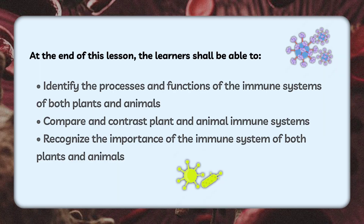Here are our learning objectives for today. At the end of this lesson, learners shall be able to: first, identify the processes and functions of the immune systems of both plants and animals, since plants and animals differ even in their immune systems; second, compare and contrast plant and animal immune systems; and lastly, recognize the importance of the immune system for both plants and animals.